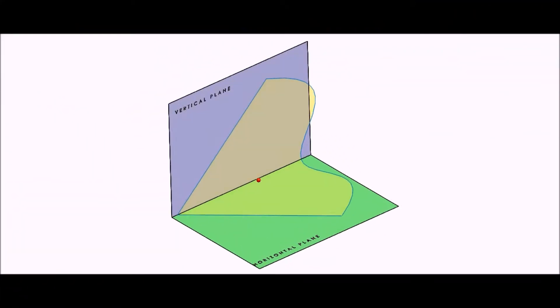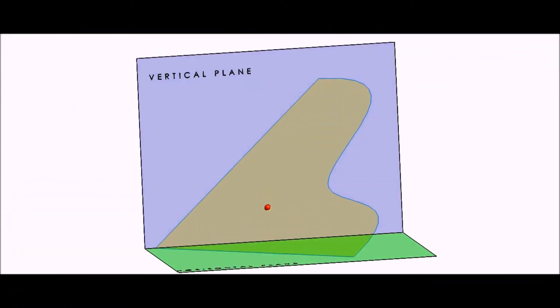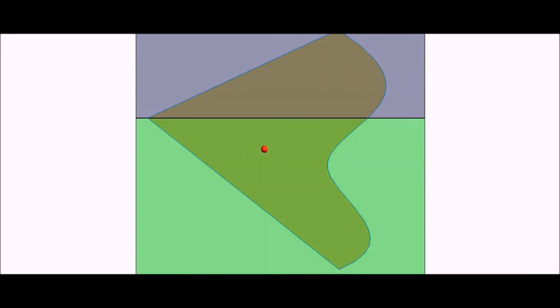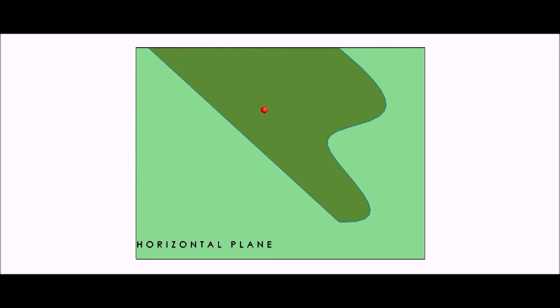Here we see a SOLIDWORKS model of a point on an oblique plane. To find the vertical trace we must use the principle of a cutting plane.